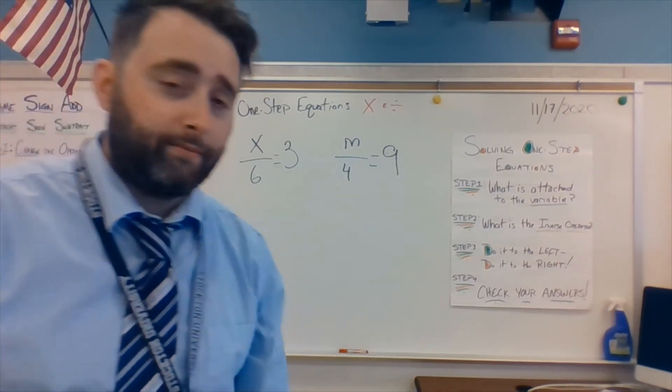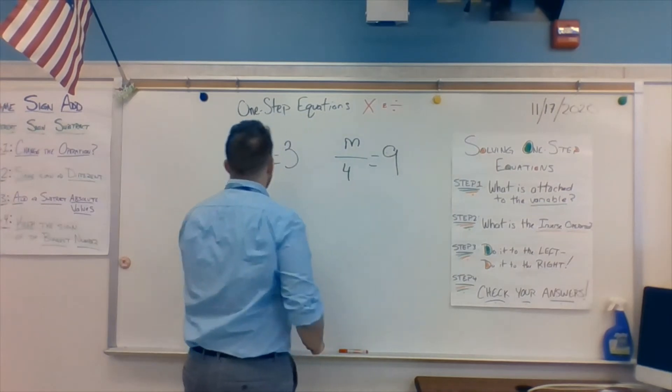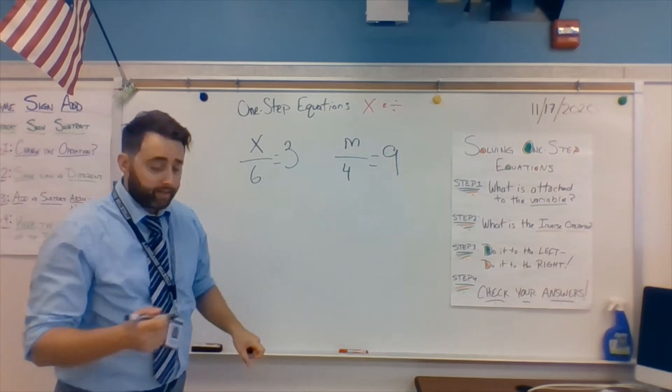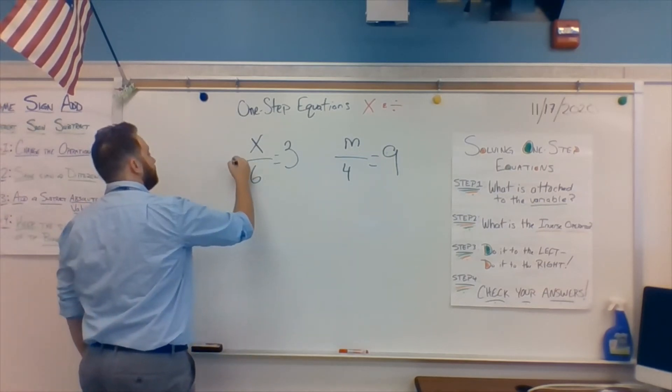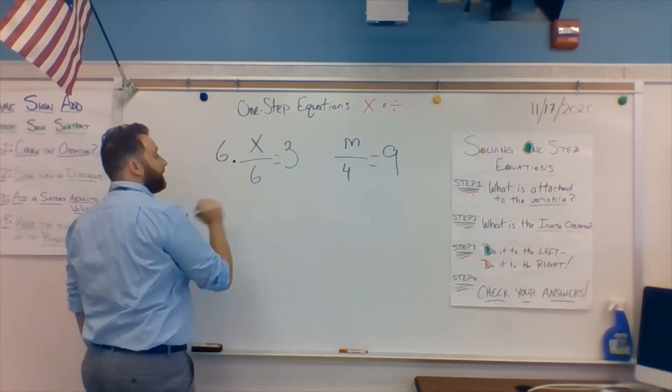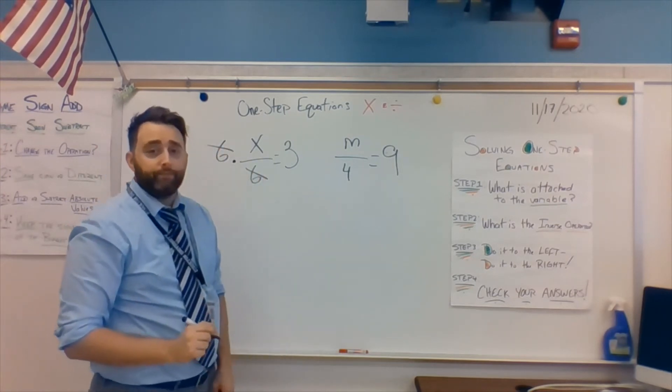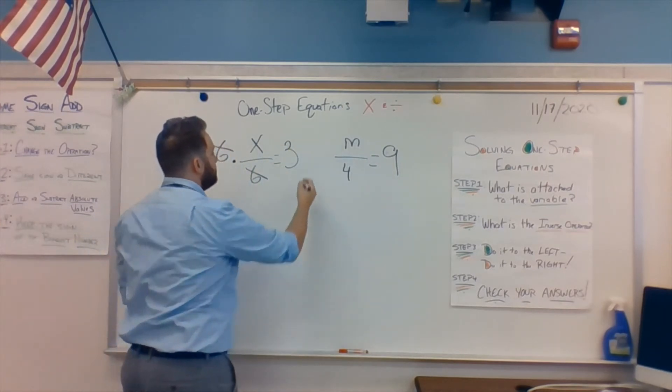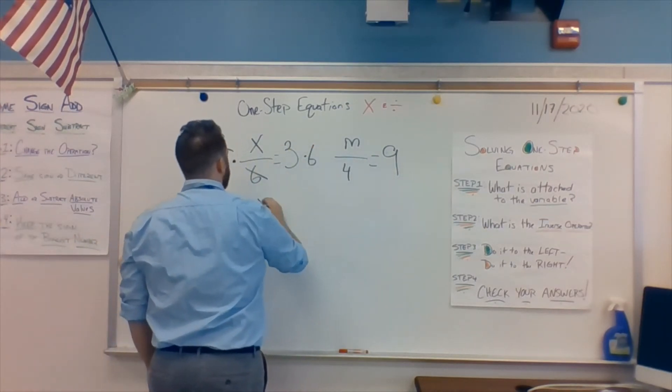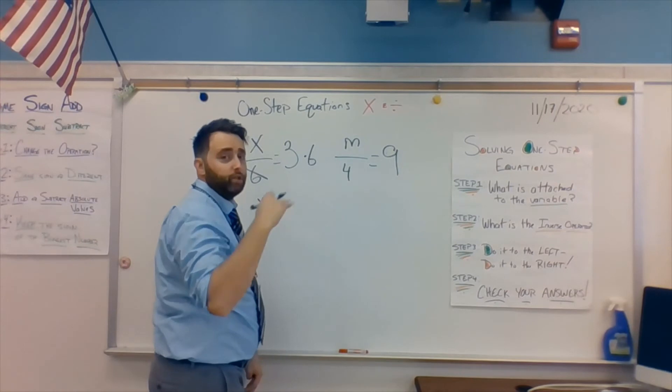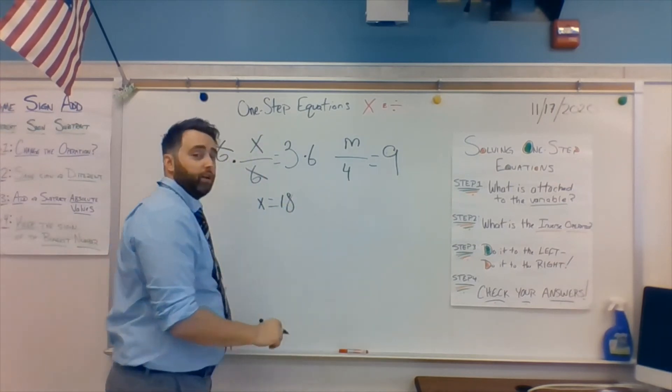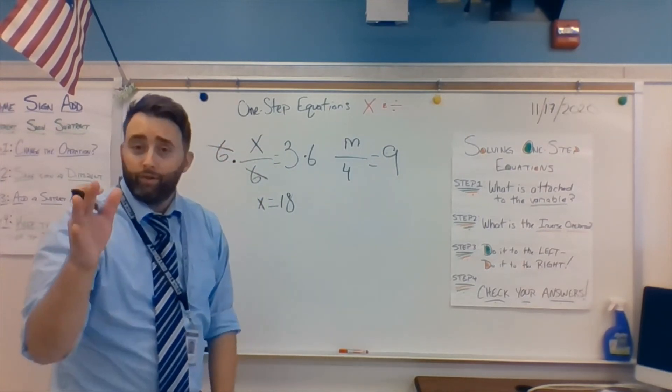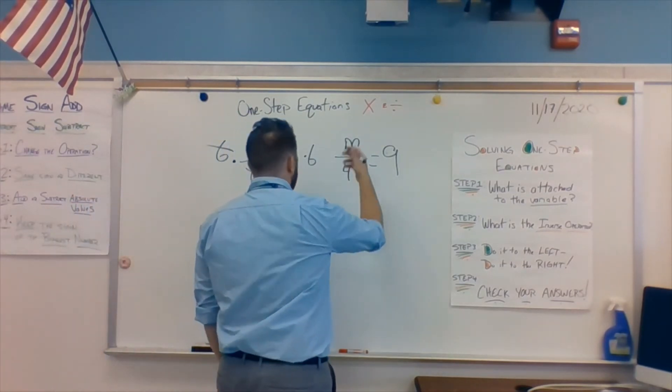What is stuck to the variable? A 6. What is the opposite of a divided by 6? Multiplying by 6. So, multiply it by 6. Cancels that out. Do it to the left. Do it to the right. X equals 6, 12, 18. Very good. Very good. Double check. 18 divided by 6 is 3. You were correct. Very good.